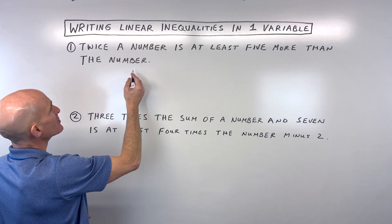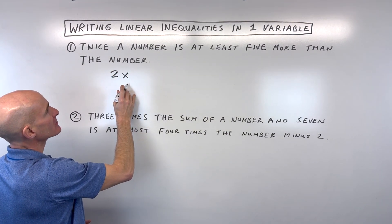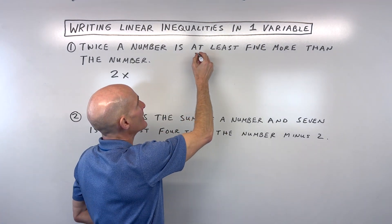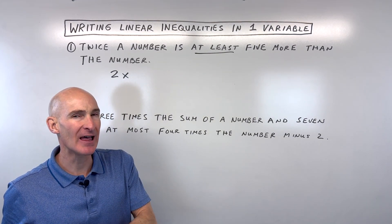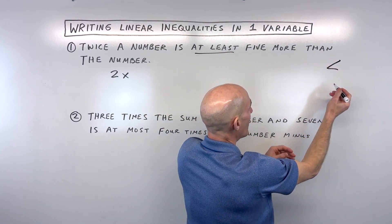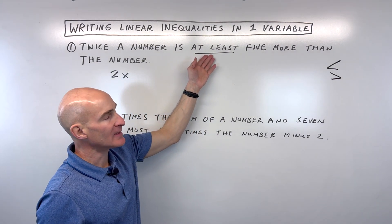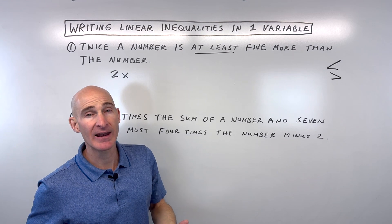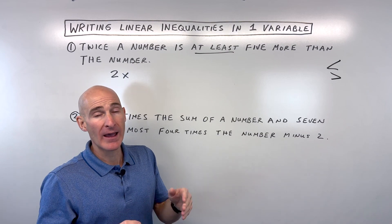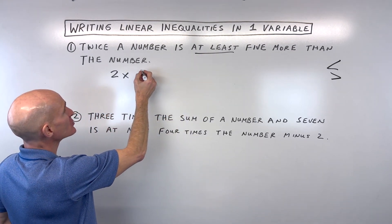So twice a number — twice means you're multiplying it by two, so we could say two times our number x. Now, 'at least' — a lot of times students think 'least' sounds like less than. But think about it: if you want to study at least an hour every day, could you study less than that, like a half hour? No — at least means one hour or more. So even though it sounds like less than, 'at least' means that much or greater.